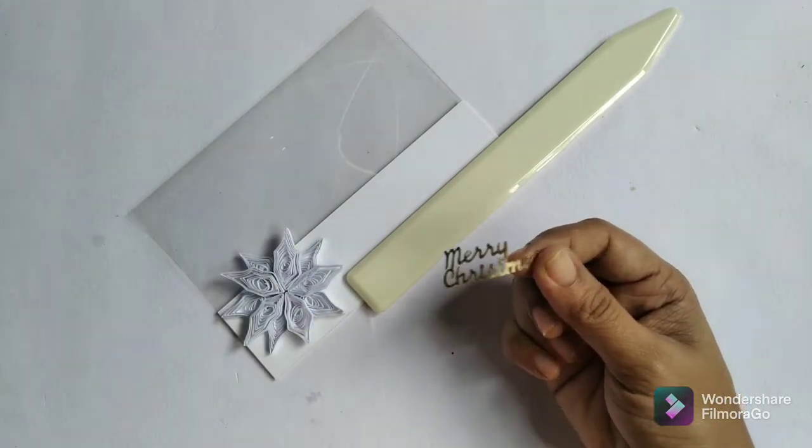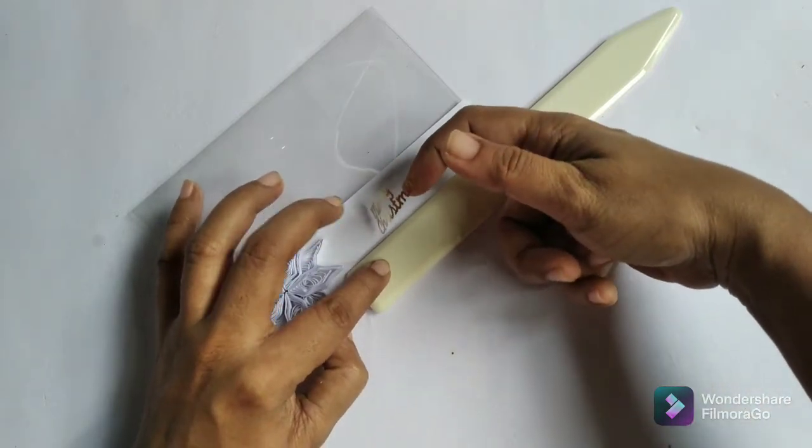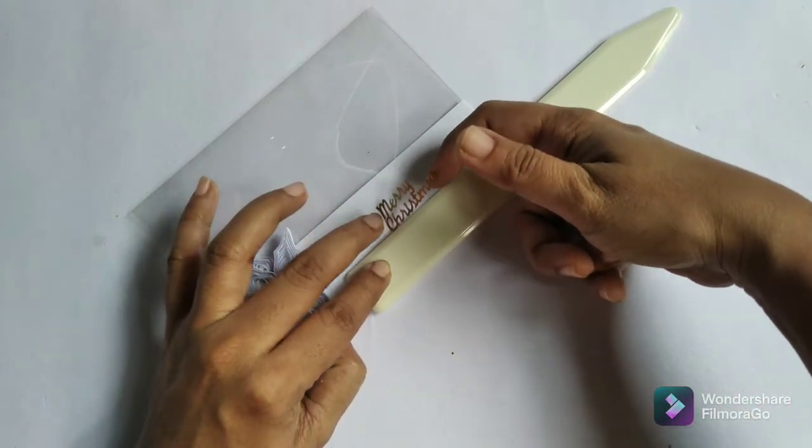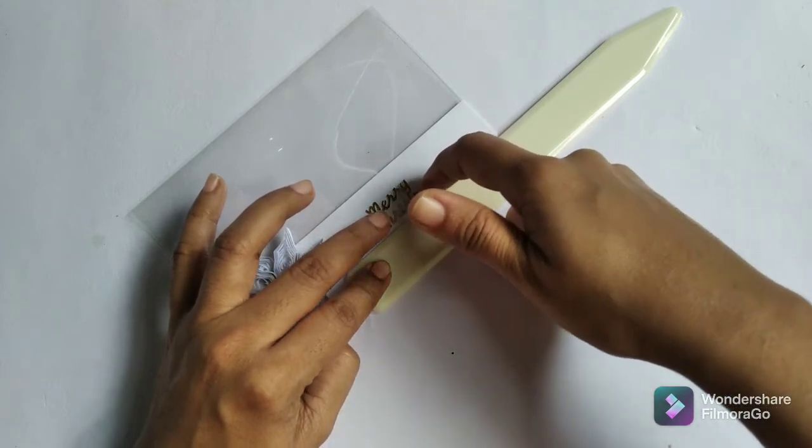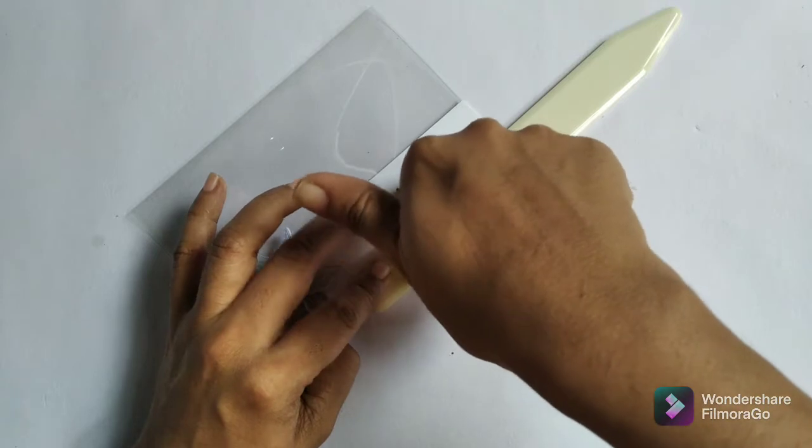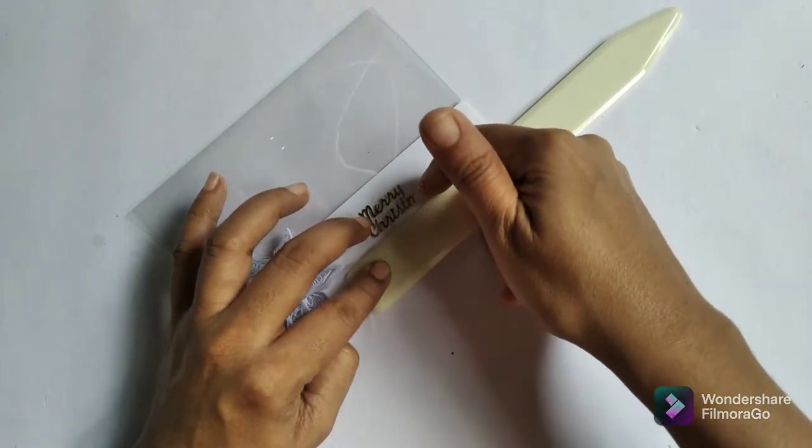Add a Merry Christmas sentiment from a sticker set. You can instead write it down or print it out or use a stamp to stamp the sentiment in. You can use a ruler or a piece of paper to make the sentiments straight.